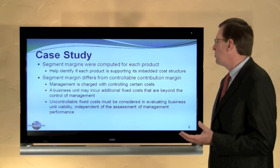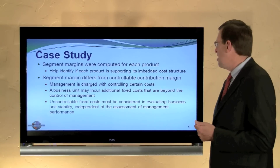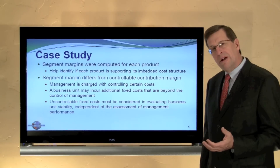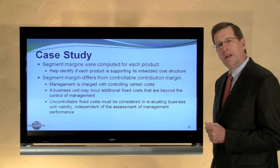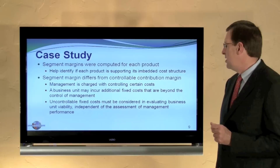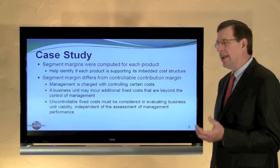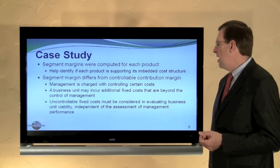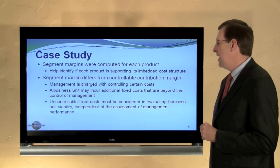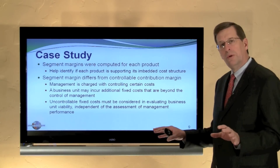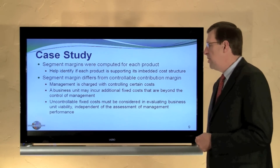Consider that segment margins were computed for each product, which helped identify if each product is supporting its embedded cost structure. Segment margin differs from the controllable contribution margin. Management is charged with controlling certain costs, but a business unit may incur additional fixed costs that are beyond their control. An uncontrollable fixed cost must be considered in evaluating unit viability, but not necessarily in assessing the performance of a particular manager. So those are two discrete elements: management effectiveness as well as the unit's viability.